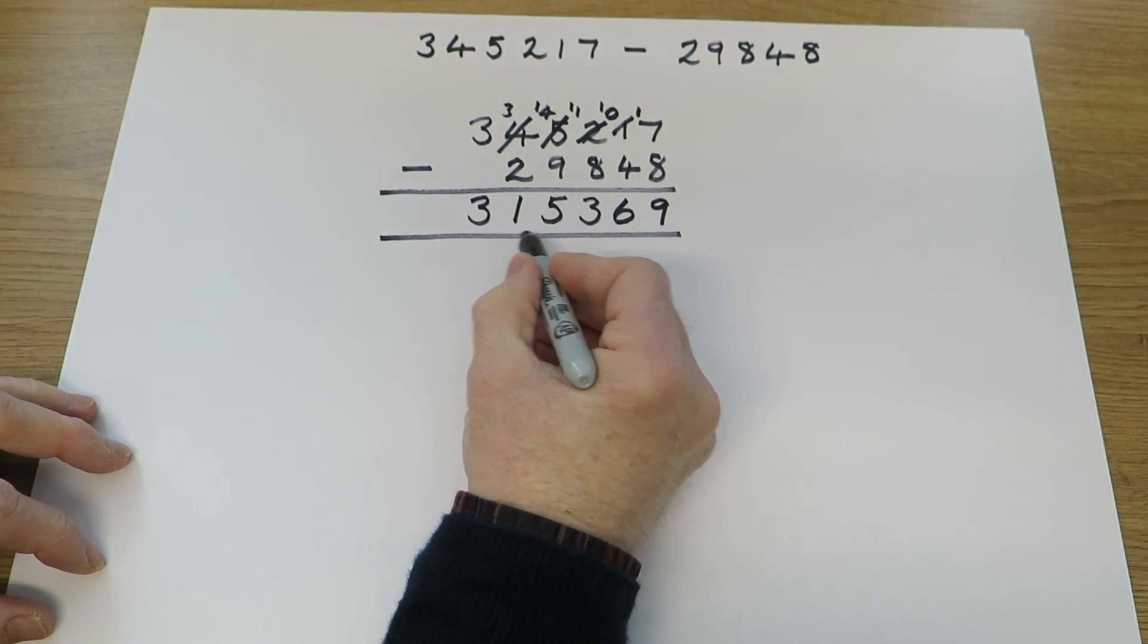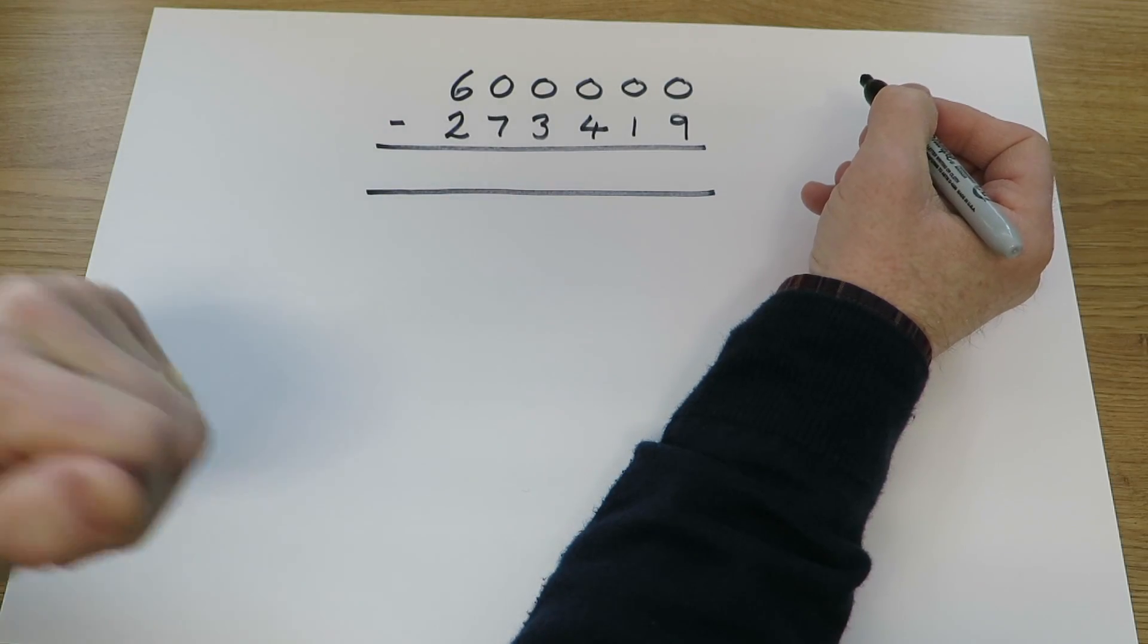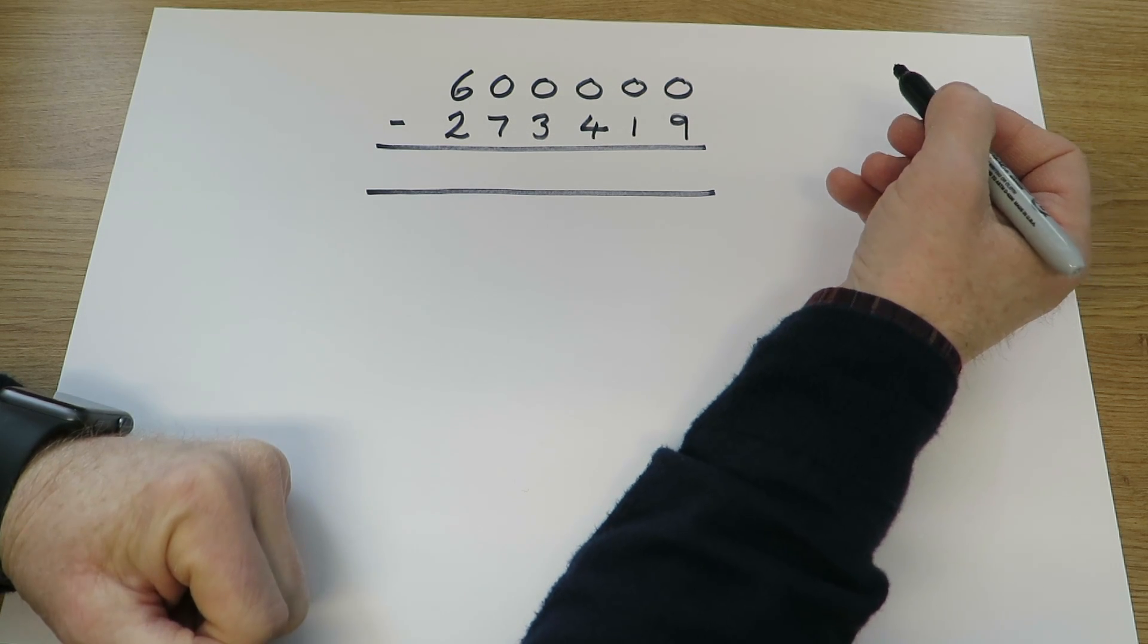Final answer, 315,369. This type of subtraction can seem very difficult, but there is a clear system.